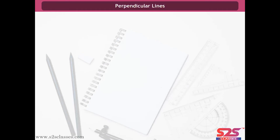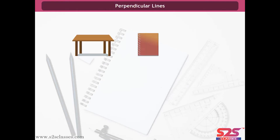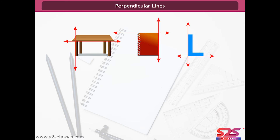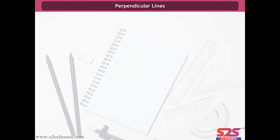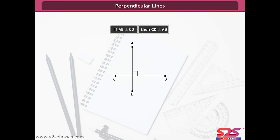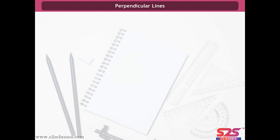Perpendicular lines. Consider these figures: a table, a book and the English alphabet L. All these figures have two intersecting lines. Note that the angle between these intersecting lines is 90 degrees — such lines are called perpendicular lines. Therefore, when the angle formed between two intersecting lines is a right angle, the lines are said to be perpendicular lines.